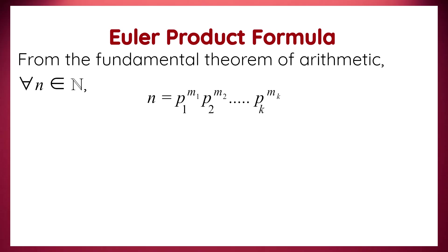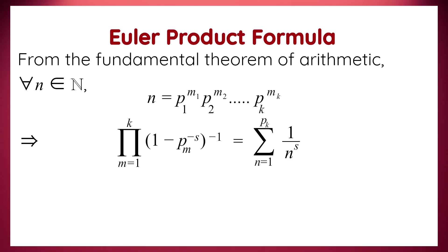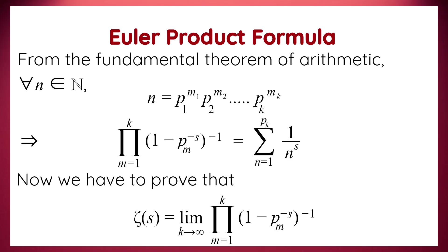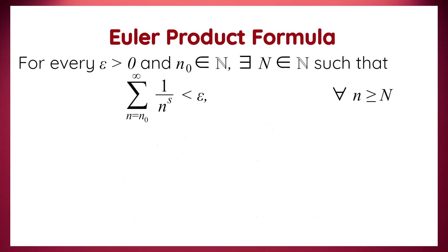But from the fundamental theorem of arithmetic, each natural number n can be expressed uniquely as a product of primes. So by using this theorem, we get: the product from m equals 1 to k of the reciprocal of 1 minus pm to the power minus s, equals the sum over n from 1 to pk of 1 over n to the power s. What remains to be proven is that zeta(s) equals the limit as k tends to infinity of the product from m equals 1 to k of the reciprocal of 1 minus pm to the power minus s.